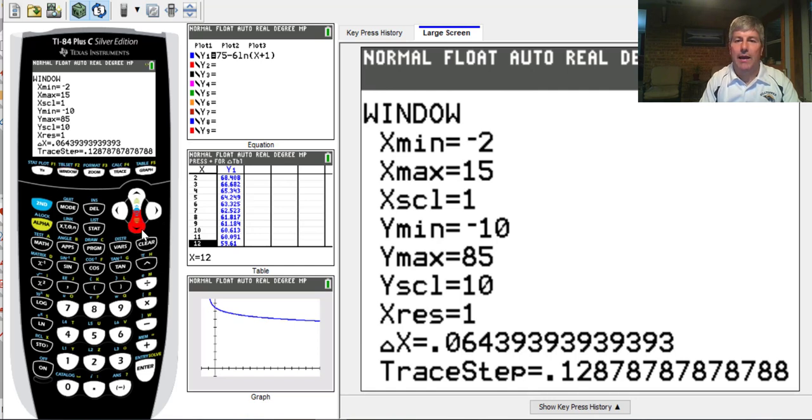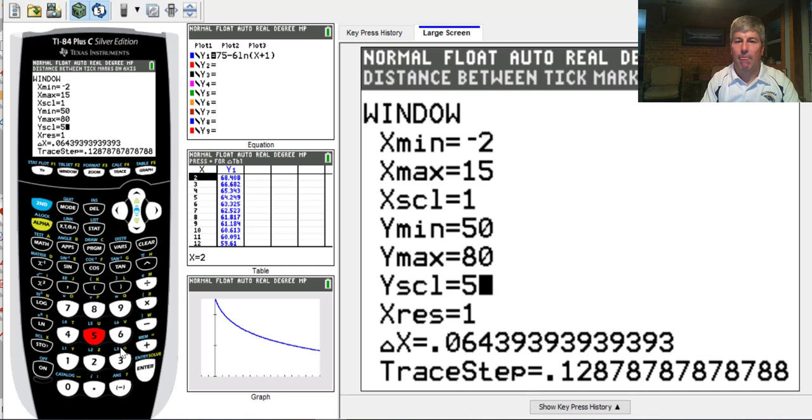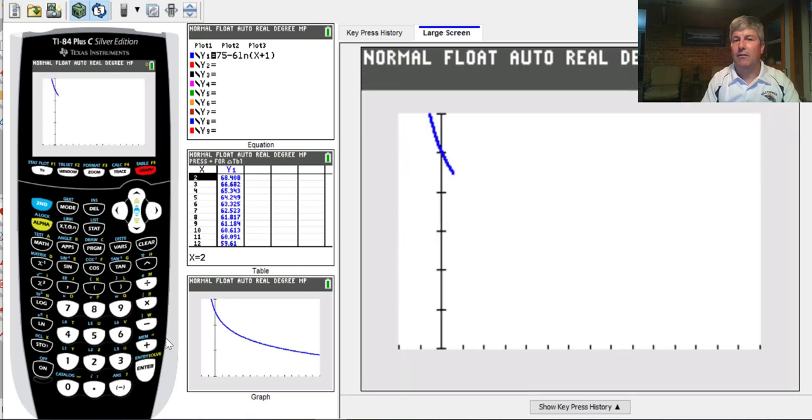I'm going to keep my x's the same. My y-min though, I really only need to go down to like 50. From 75, let's make that 80. We could even count by 5's here. And then graph that. That gives us a nice looking graph. Our table values don't change, but it sure looks good.